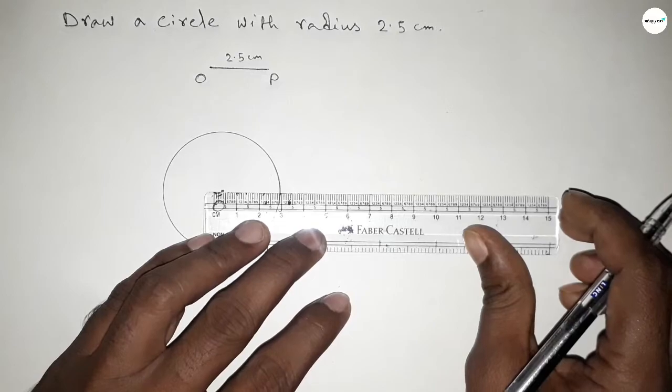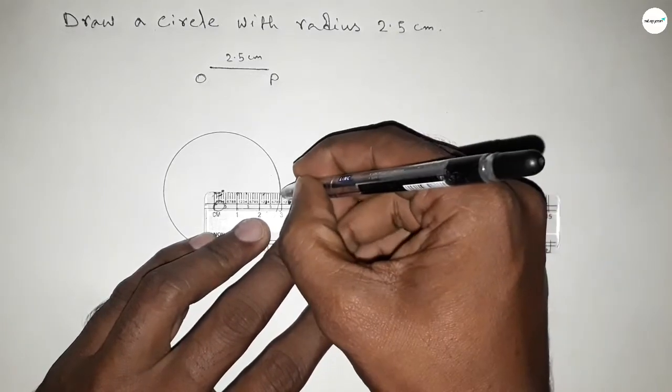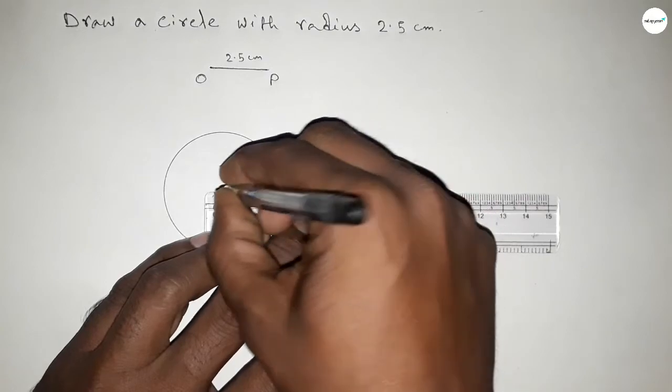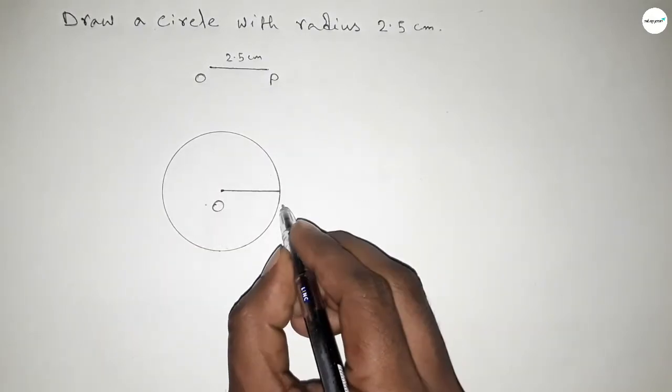So by joining this we got a radius, and here taking point P.